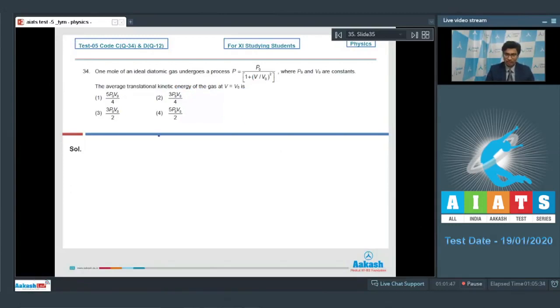Dear students, the average translational kinetic energy is equal to 3 by 2 RT. At V is equal to V0, if we substitute this value in this expression, the value of P turns out to be P0 by 2.